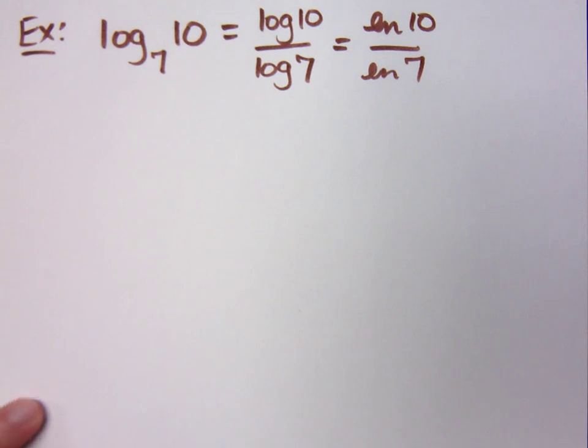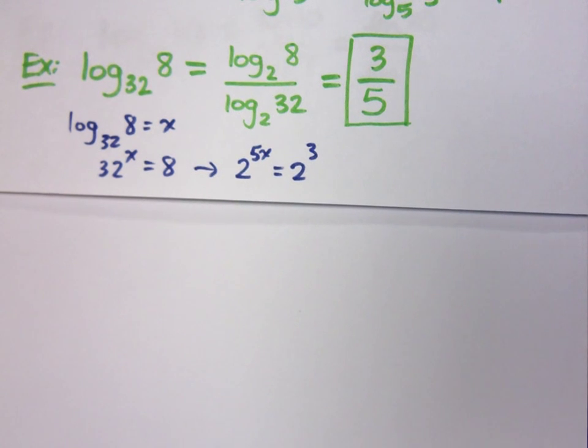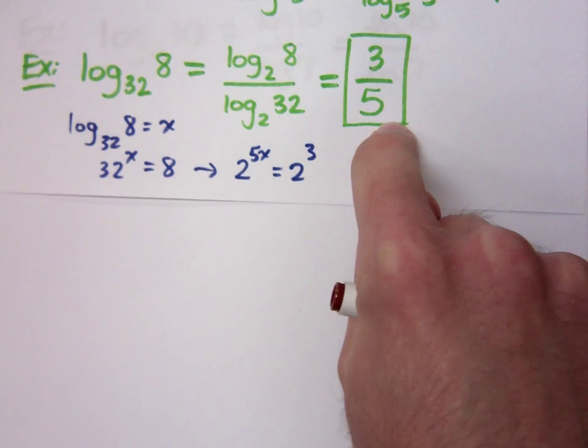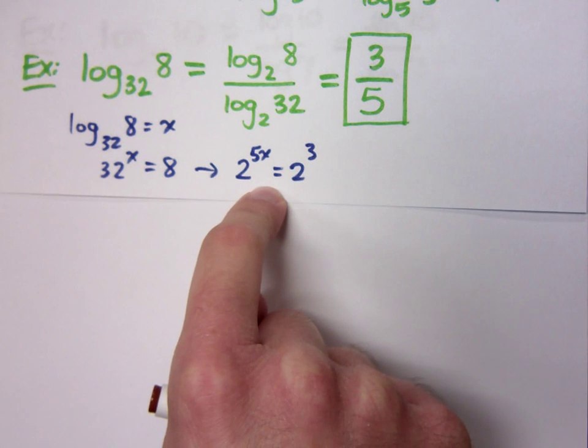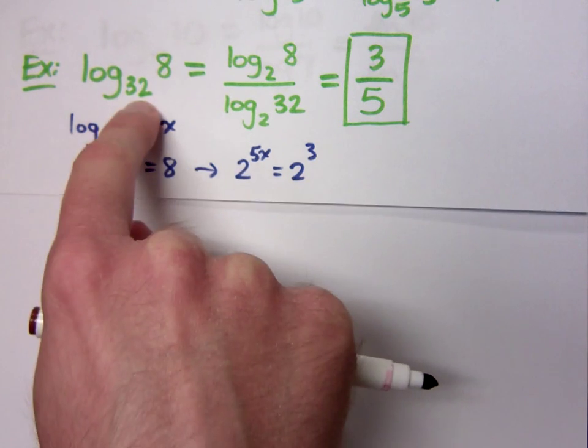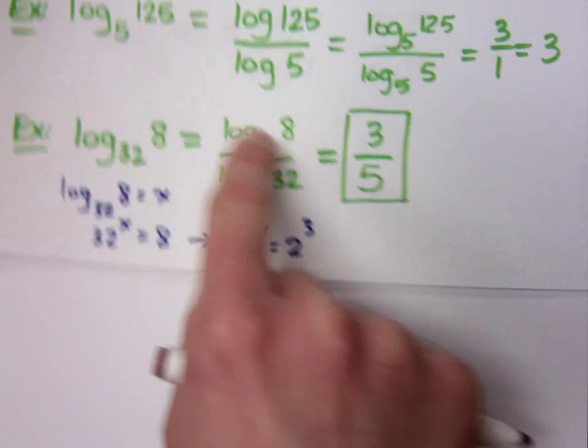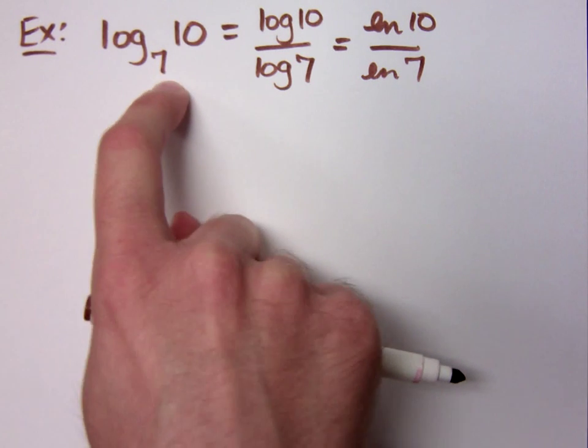If I don't let you use a calculator, like on the last example that we had here, if I say do this without a calculator, you need to know how to either do it this way or go back to the way we saw it before the test. But see, this guy can be done without a calculator. This one up here can be done without a calculator. This guy cannot be done without a calculator. These guys don't have a common base.